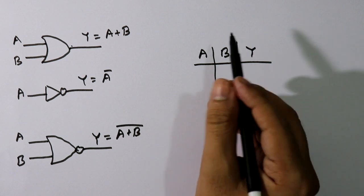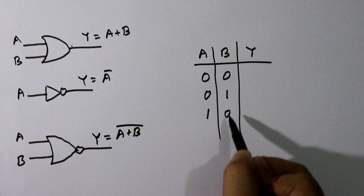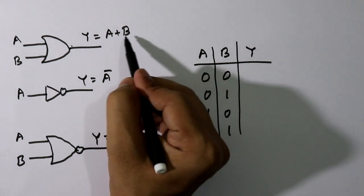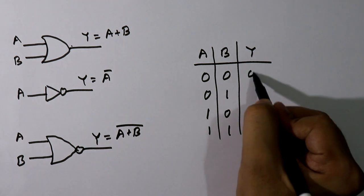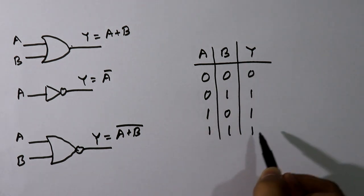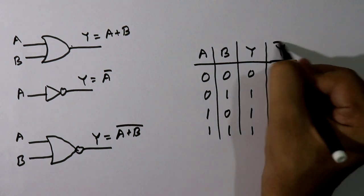We have four input conditions: 0 0, 0 1, 1 0, and 1 1. We know the output will be A plus B, so 0 plus 0 is 0, 0 plus 1 is 1, 1 plus 0 is 1, 1 plus 1 equals 1.